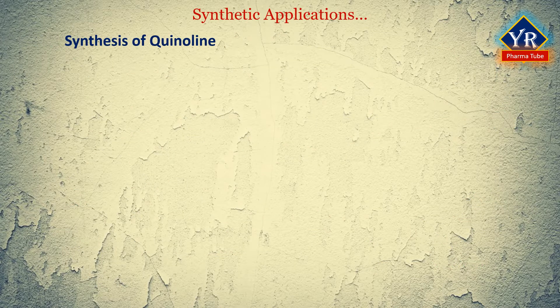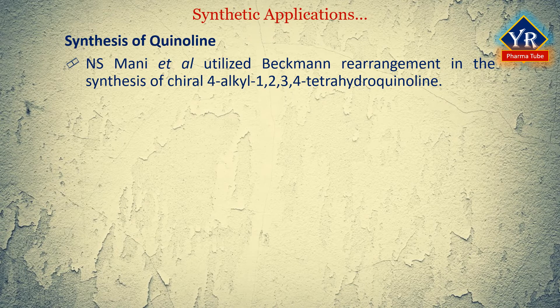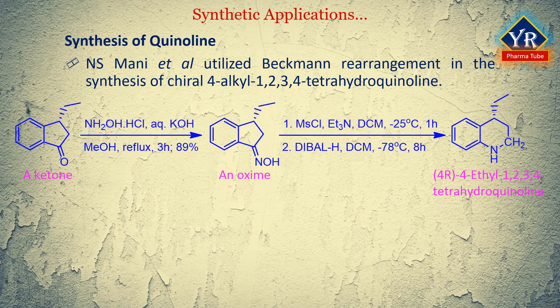In the synthesis of quinoline derivatives, NS Money and co-workers utilized the organoaluminium-promoted modified Beckman rearrangement during their efficient synthetic route to chiral 4-alkyl-1,2,3,4-tetrahydroquinoline. 4-ethyl-1,2,3,4-tetrahydroquinoline was obtained by rearrangement of the ketoxime sulfonate of 3-ethylindane-1-one. The resulting six-membered lactam product was reduced to the corresponding cyclic secondary amine with diisobutylaluminium hydride.